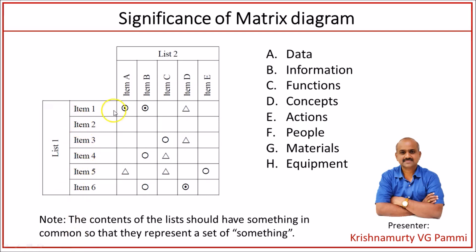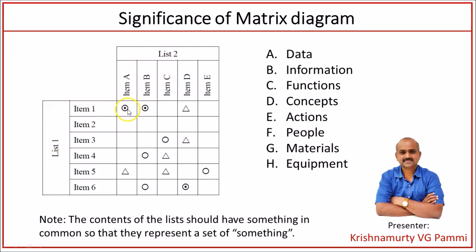Let us take people as an example. Person 1 through person 6 of group 1 are compared with person A, person B, person C, person D, and person E of group 2. When we say person 1 of group 1 is strongly correlated with person A of group 2, it gives a powerful message. If we want to bring coherence between these two groups, we need to look at wherever strong correlationship exists.